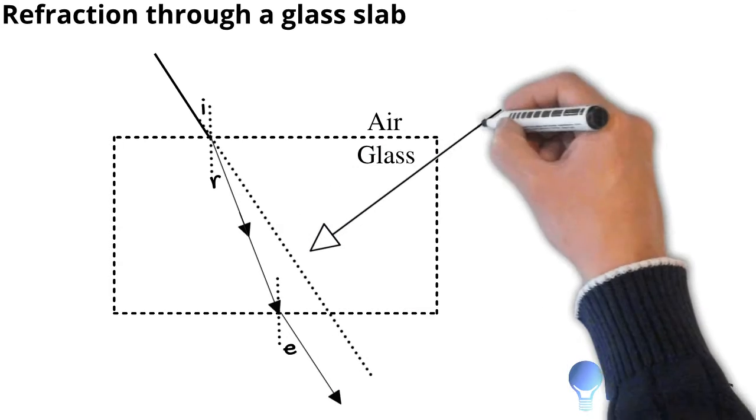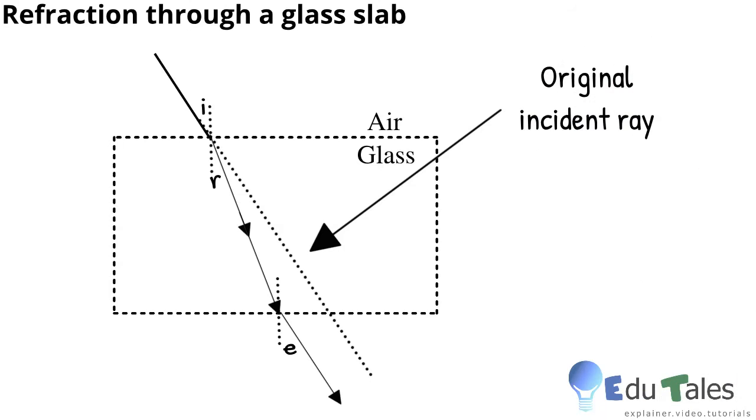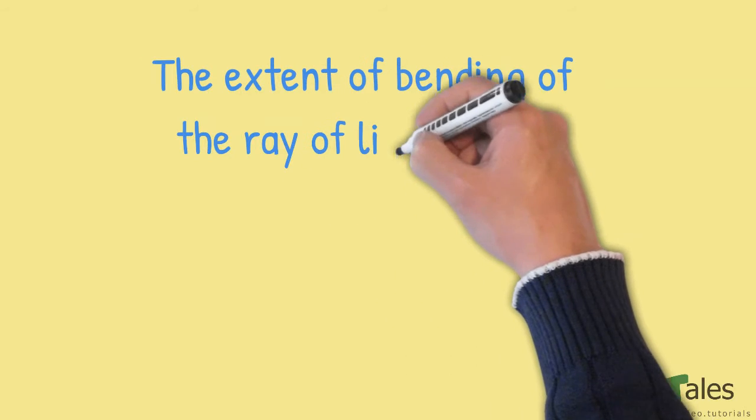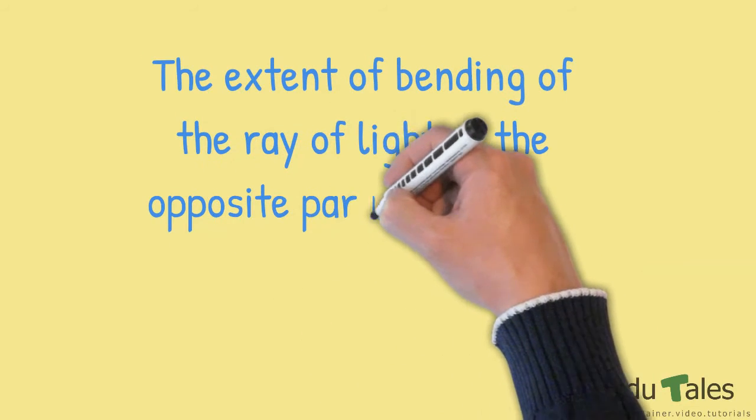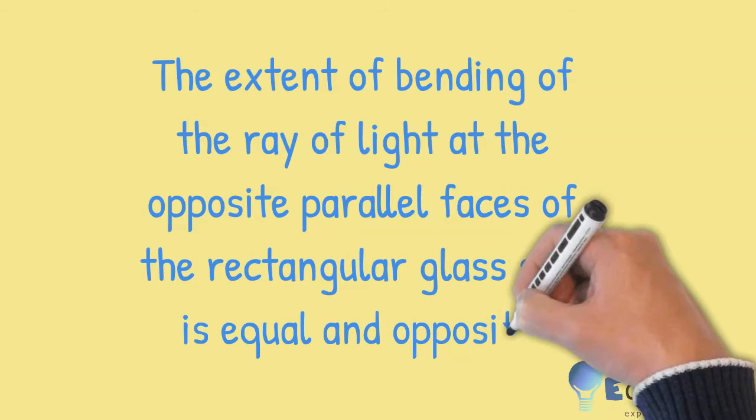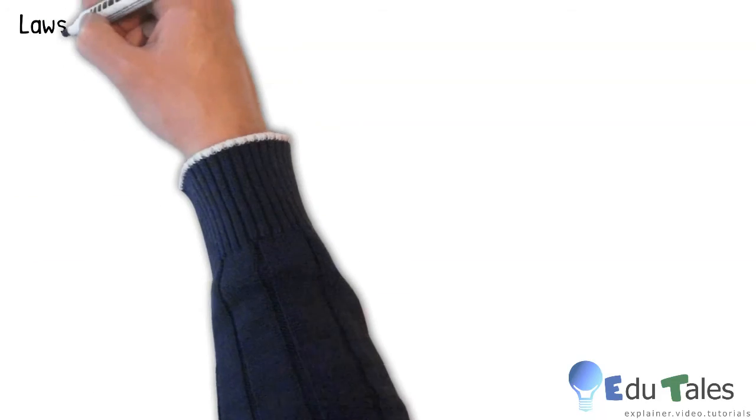Here the dotted line represents the original incident ray and you will find that the emergent ray is exactly parallel to the incident ray. The perpendicular distance between the emergent and the incident ray is called path shift. This occurs because the extent of bending of the ray of light at the opposite parallel faces of the rectangular glass slab is equal and opposite. Laws of refraction: